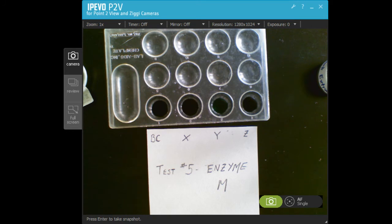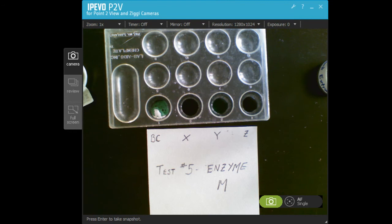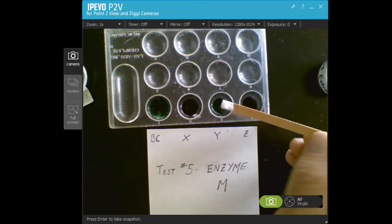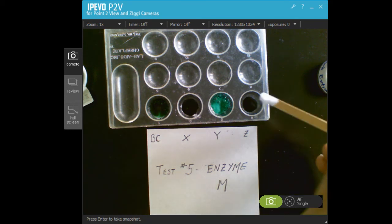If enzyme M is present there will be fizzing. So I'll put a small amount. You can see Botanicuris most definitely has enzyme M in it. X does not seem to have enzyme M. Species Y most definitely shows enzyme M.